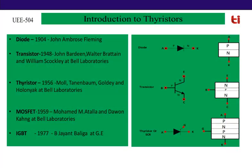Let's go to the history of these semiconductor devices. The diode was developed in the year 1904 by John Ambrose Fleming. It is an uncontrolled device. Whenever the anode is connected to positive supply and cathode to negative supply, the diode will conduct in one direction — known as forward bias. If anode is connected to negative supply and cathode to positive supply, it will be reverse bias.